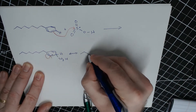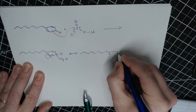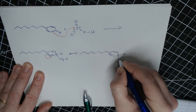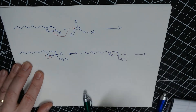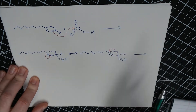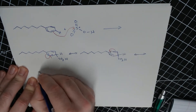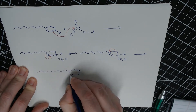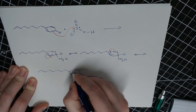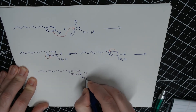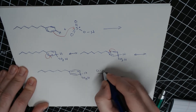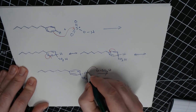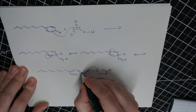After that, we want to draw the resonance structures of the intermediate. Finally, we want to deprotonate the intermediate to generate the product.